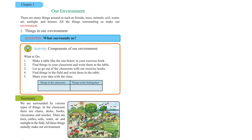Now let's start with Chapter 1. The name of this chapter is 'Our Environment.' There are many things around us — friends, trees, animals, soil, water, air, sunlight, and houses. All the things surrounding us make our environment. To find out what surrounds us, we do an activity: make a table in your exercise book with two headings — 'Things in the Classroom' and 'Things in the Field/Garden' — and write what you find.